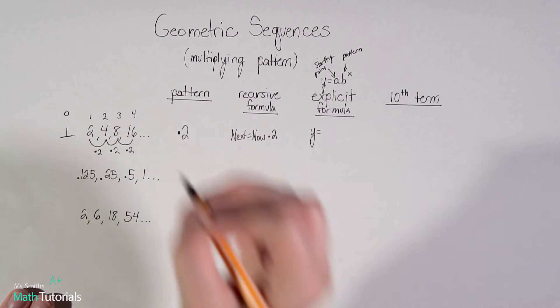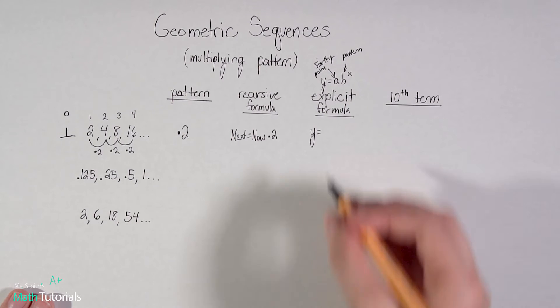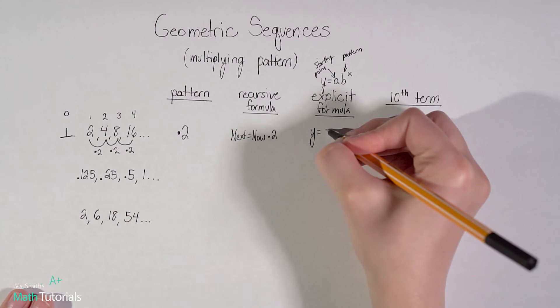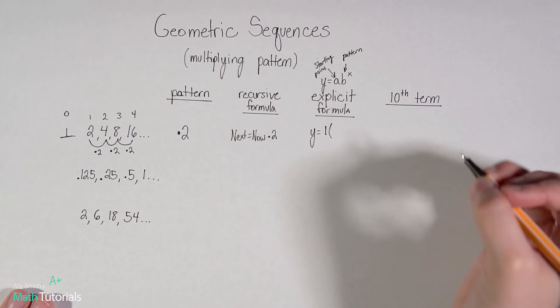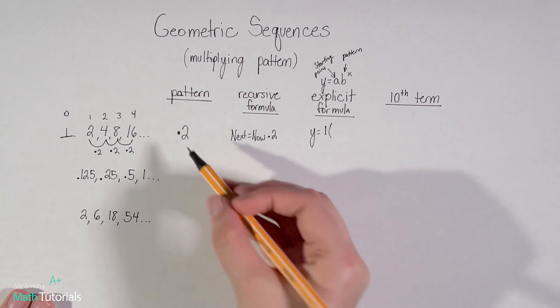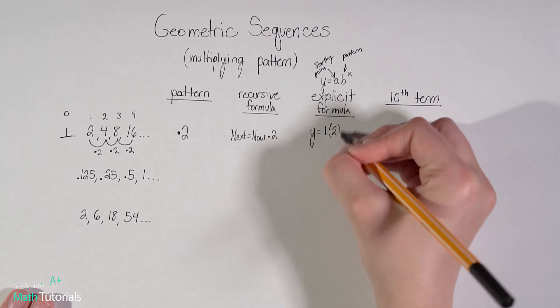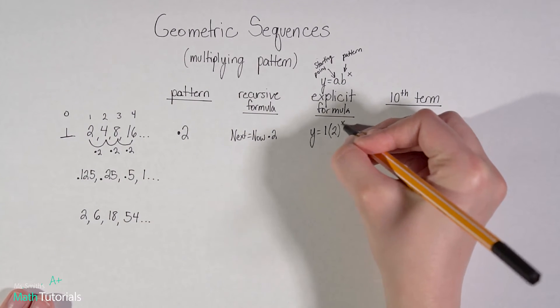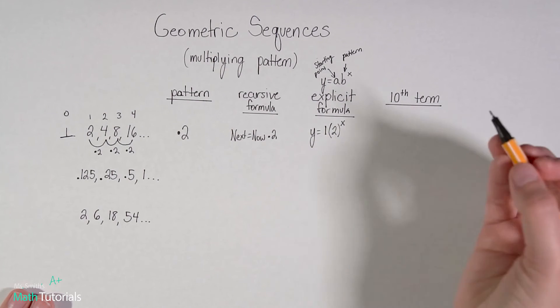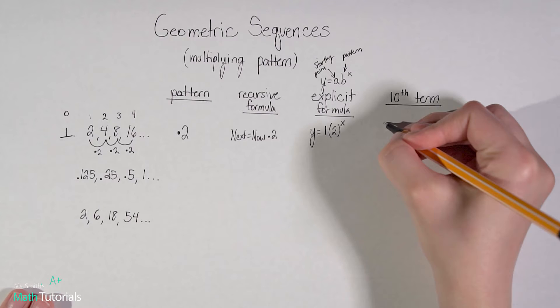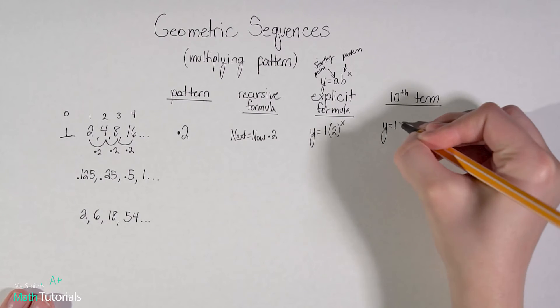So if I'm multiplying by 2 to go this way, if I divided by 2, what would I get here? And the answer is 1. 2 divided by 2 would be 1. So Y equals A, which we're saying is 1, that's our starting point, times our B, B is our pattern, so 2, to the power of X. And the X is what we're going to fill in when we want to know the nth term. In this case, the 10th term.